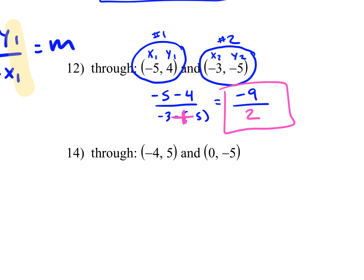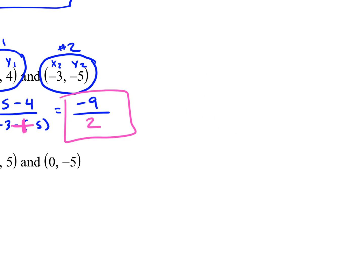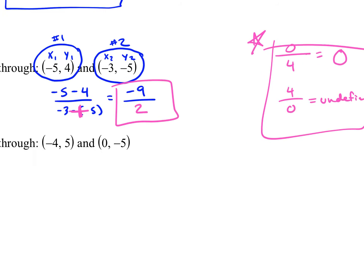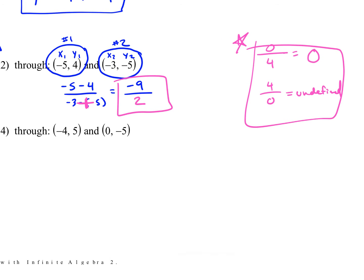When your final answer is 0 over a number, is it undefined? No. When 0 is on top — if you had 0 over 4, what would my answer be? 0. What if 0 is on the bottom? Then it's undefined. So this is a helpful hint: if 0 is on top, your answer is 0; if 0 is on the bottom, it's undefined.